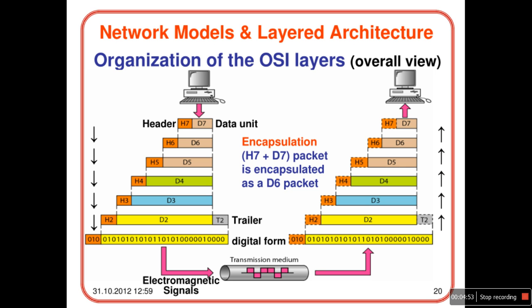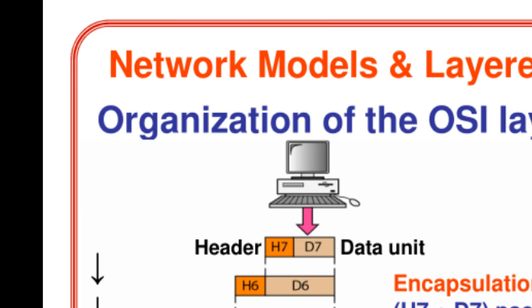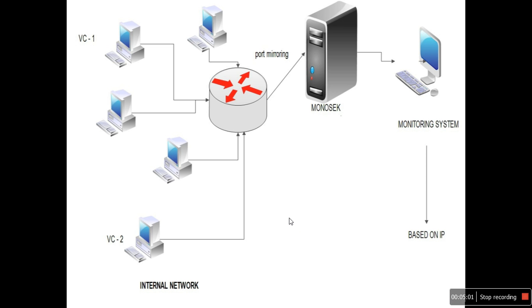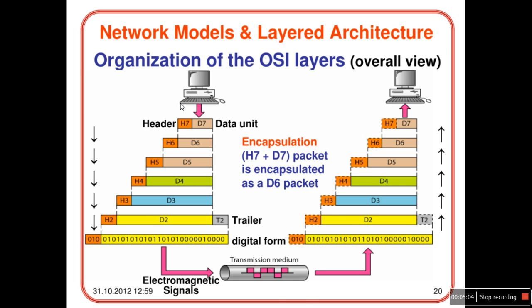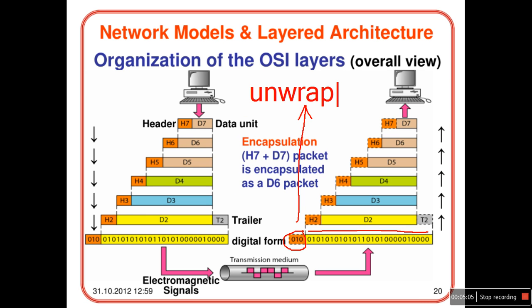At the physical layer it is transformed into binary format and sent via electromagnetic signals. On the receiver end, you have the header and the data which is then unwrapped as you go up the layers. As you go up the layer, the data is obtained by removing the headers.